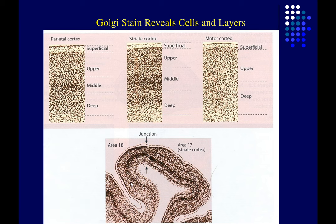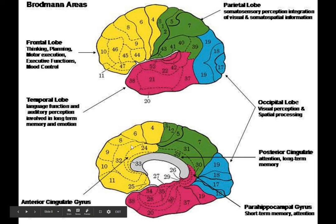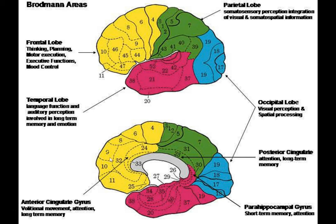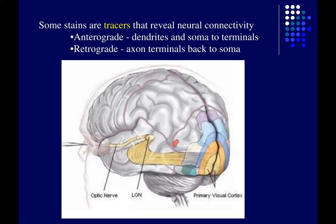An early histologist named Brodmann developed a really comprehensive map of the human cerebral cortex by carefully examining patches of human cortex to look for areas where they differ. He identified well over 40 different discrete areas in the human cortex — histologically or cytoarchitectonically distinct regions. Cyto means cell, so the cellular architecture varies from one region of cortex to another. We still use these Brodmann areas when describing the locations of our research on human cortex.